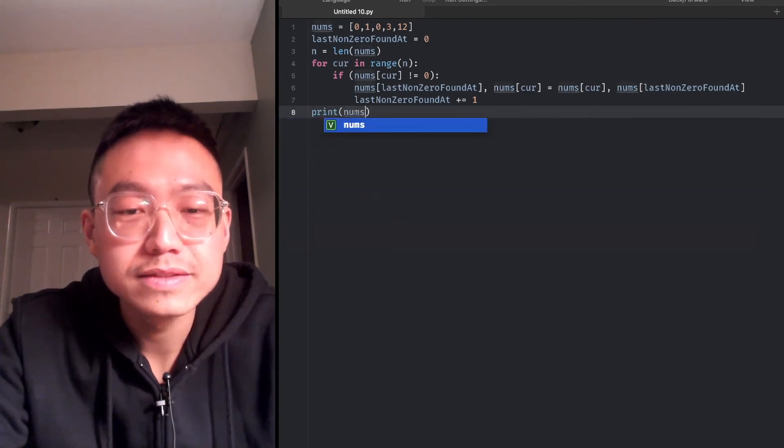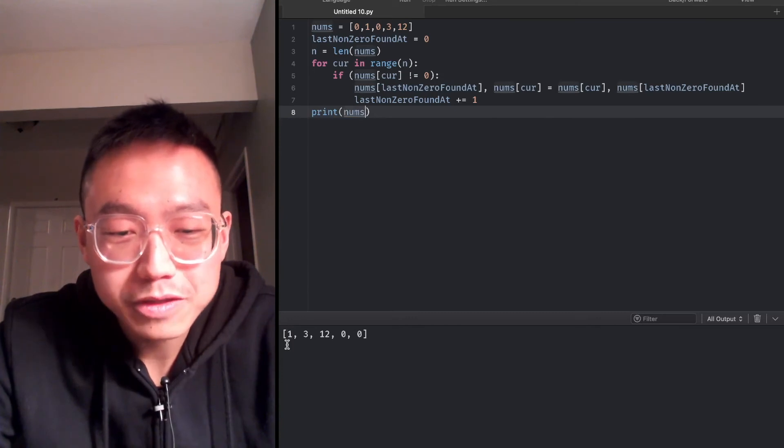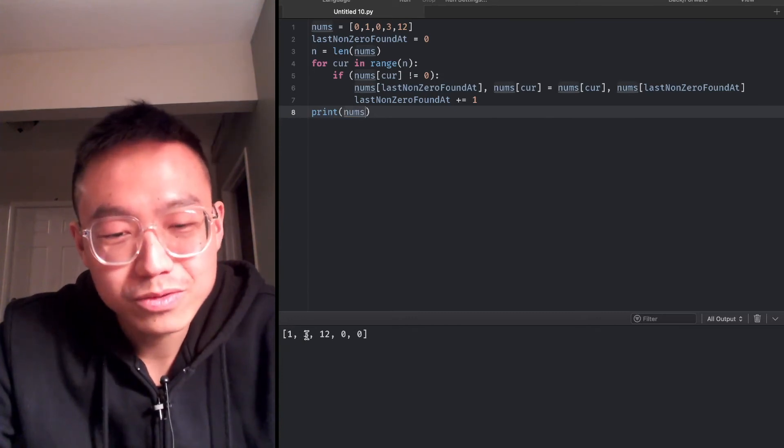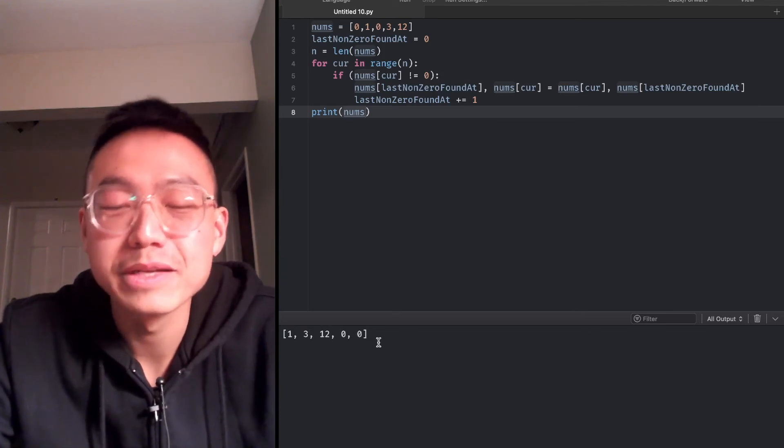We can print it. Yeah, it's a very clever algorithm. Now it's 1, 3, 12, and the last part of them is zero.